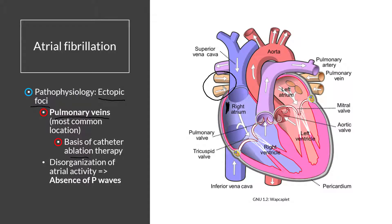Because of the electrical activity coming from these pulmonary veins, this is ultimately going to lead to disorganized atrial activity, which will manifest as an absence of P waves on our EKG. This is highly characteristic for atrial fibrillation.